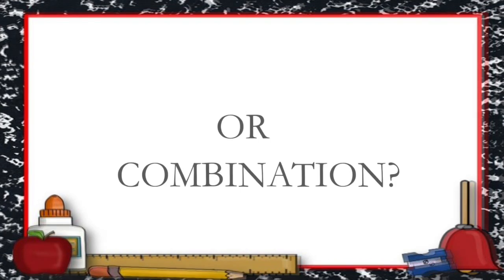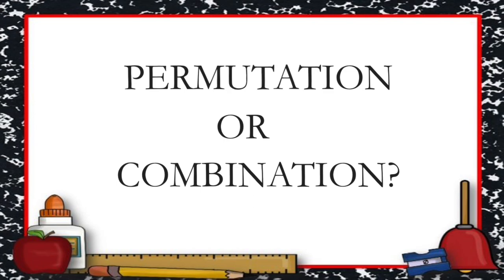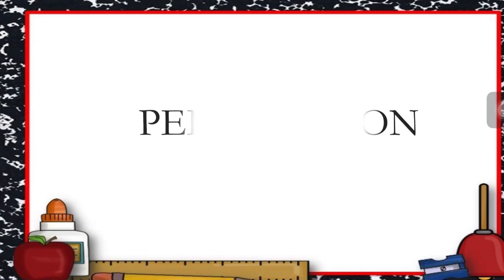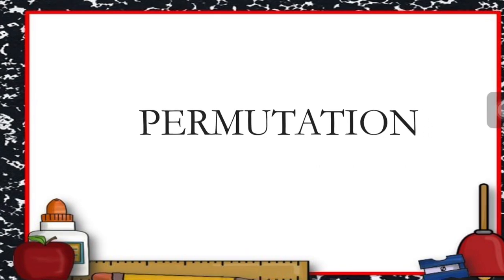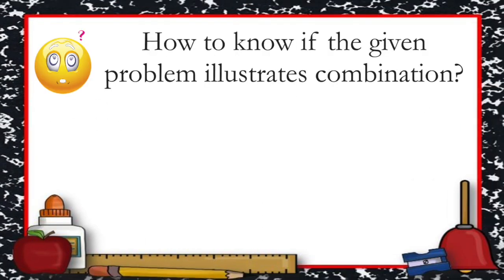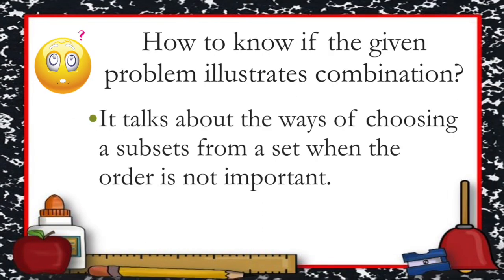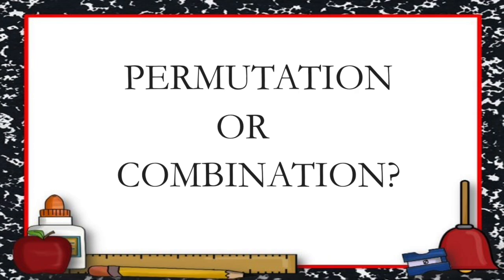Good day everyone. In this video we'll talk about problems that illustrate permutation or combination. Permutation is a mathematical technique that determines the possible arrangement of objects where the order matters, while combination determines the number of ways of choosing a subset from a set when the order is not important. Now let us find out if the following problems are a permutation or a combination.